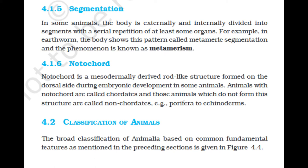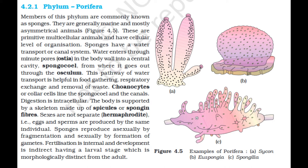Section 4.2.1: Phylum Porifera. Members of this phylum are commonly known as sponges. They are generally marine and mostly asymmetrical animals. These are primitive multicellular animals with a cellular level of organization. Sponges have a water transport canal system. Water enters through minute pores called ostia in the body wall into a central cavity called spongocoel, from where it goes out through the osculum.